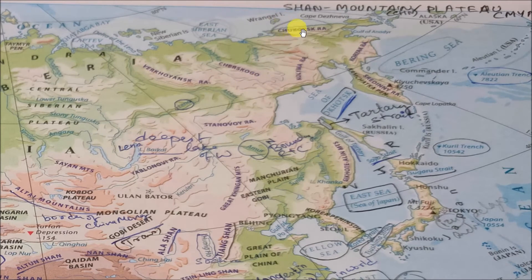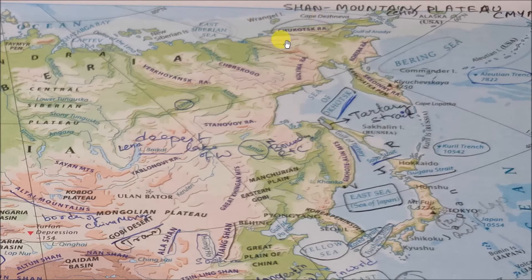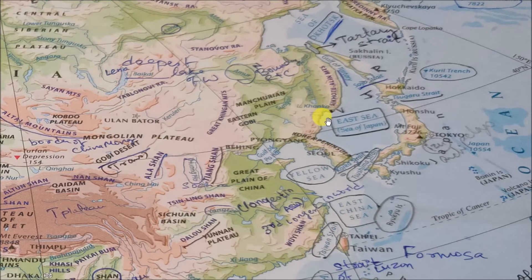Let's see in Russia. Here you will find the Chukotsk Sea. Below the Chukotsk range, here you will find the Sikhote-Alin mountains.